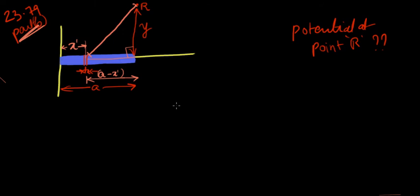So I urge you to watch part A before watching this part. What we have to find in this part is the potential due to this rod, the blue-colored rod, at point R, which is a distance of y units vertically upwards from the rod, from the end of the rod.